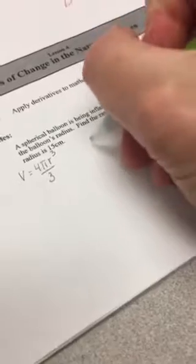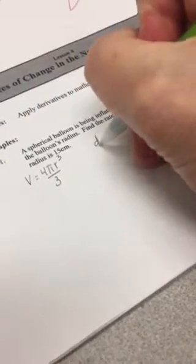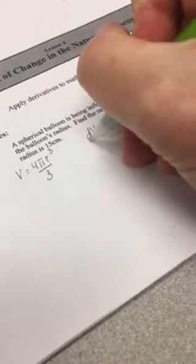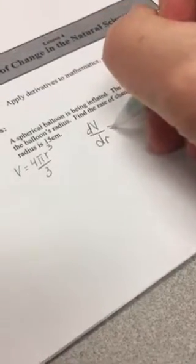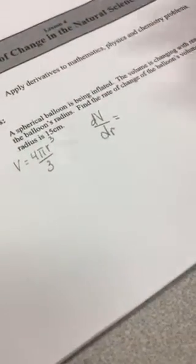So we're going to do, whenever you want to find a rate of change, you're just going to do the derivative of volume with respect to radius. So all that means is we've got to do the derivative of our expression right here. So if I'm going to do that derivative, the three comes to the front and I get 12 divided by three. So I'm going to get four pi r squared. So there's my derivative.